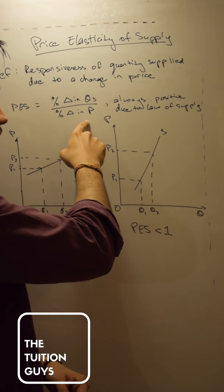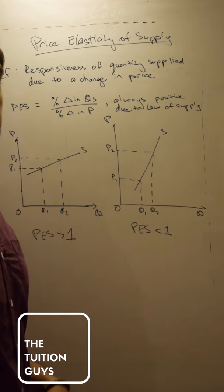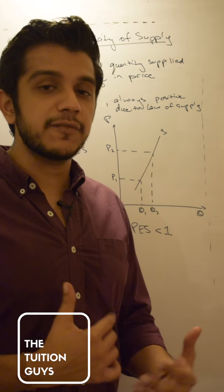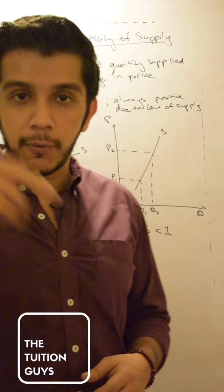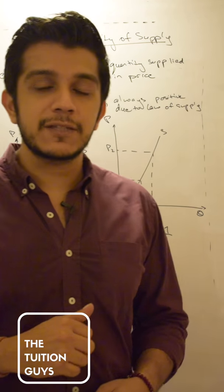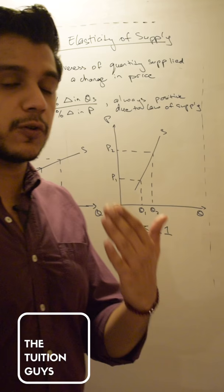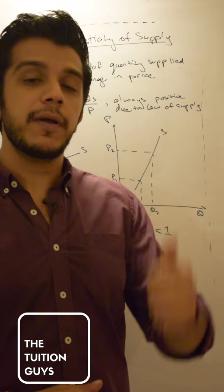This will always be positive. Price elasticity of demand would always be negative because of the law of demand. The demand is a downward sloping curve, which means that as prices go up, the quantity demanded goes down. Over here it's an upward sloping curve, so as prices go up, the producer is willing and able to make more.